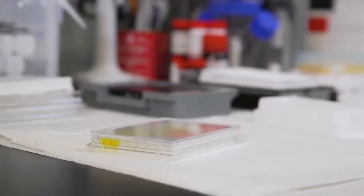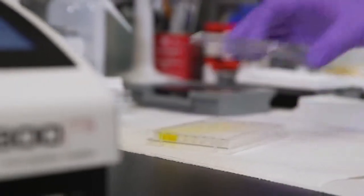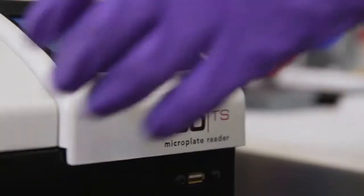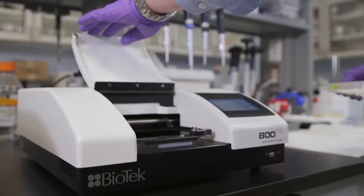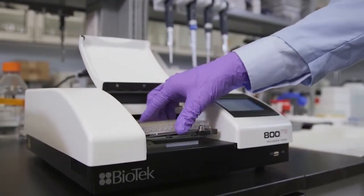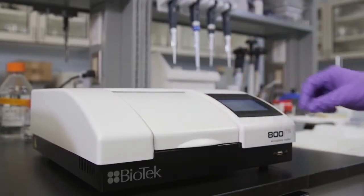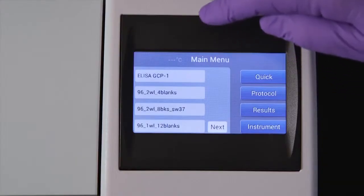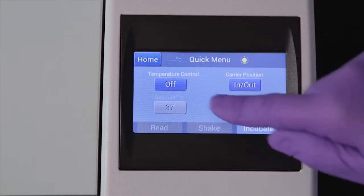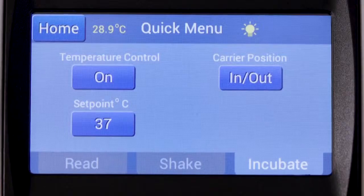With a 340 to 750 nanometer wavelength range, the 800 TS is ideal for a variety of applications including ELISA, protein, and other endpoint protocols. Incubation and shaking expand the reach to enzyme kinetics and cell-based assays.